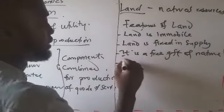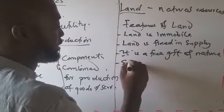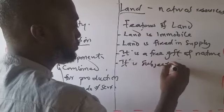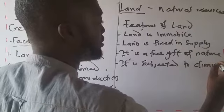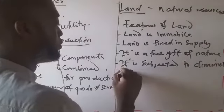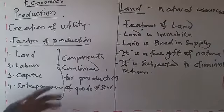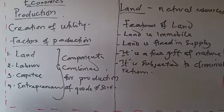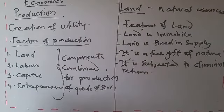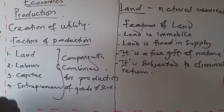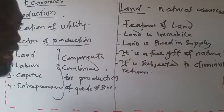Another feature of land is what we refer to as subjected to diminishing return. Land is subjected to diminishing return. What we mean by this is that it is true that land can neither be expanded or contracted, but the thing is that the natural resources in land diminishes as we use or as we use land.